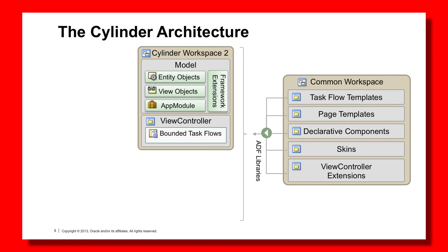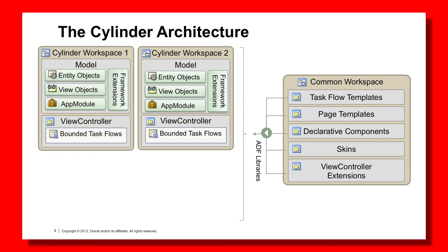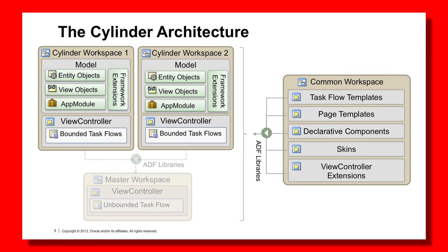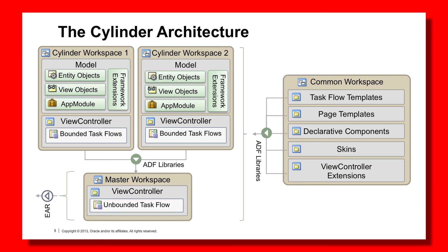You may not just have one Cylinder workspace — you'll have multiple Cylinder workspaces based around large groupings of business functionality or whatever large delineation you come up with in your overall application development. They will then be published as ADF Library Jars and the Master workspace, just like in the previous Sum of the Parts, will reconstitute those large Cylinder Bounded Task Flows back through an Unbounded Task Flow, and only be published through an Enterprise Archive or an EAR.